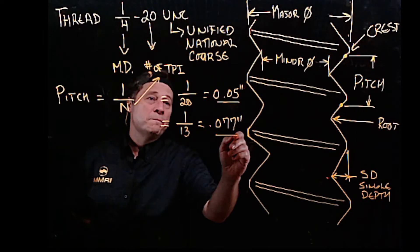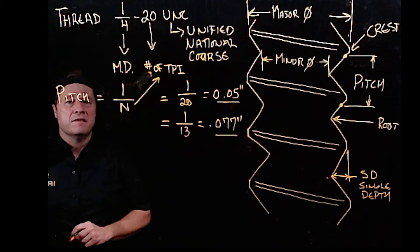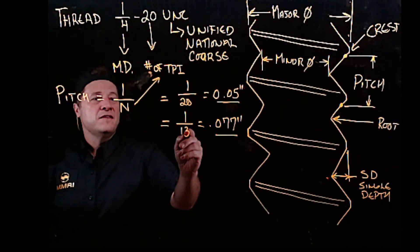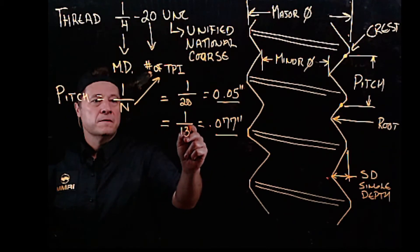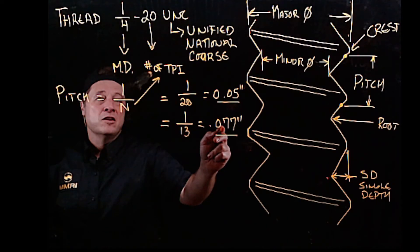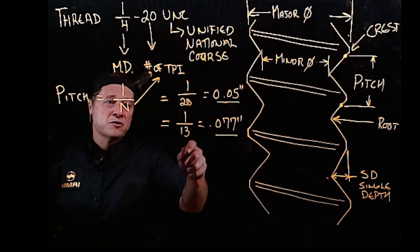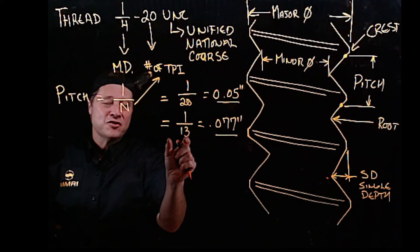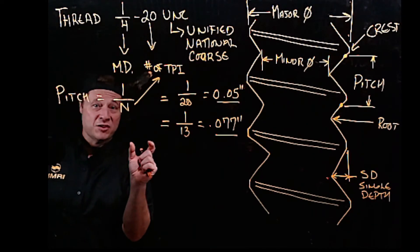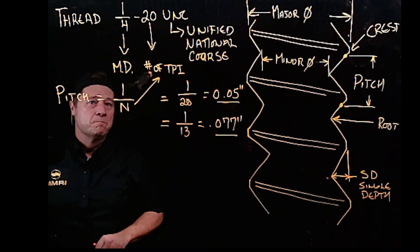So the pitch equals 77 thousandths. Notice the smaller the thread count, the larger the pitch, which makes sense. If there are fewer threads over an inch, then the threads are going to be wider because it's still an inch we're talking about.